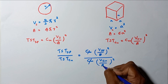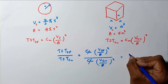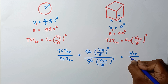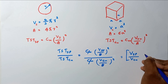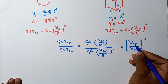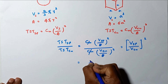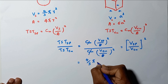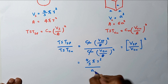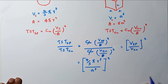We can simplify this. C_m cancels out. So we are getting (V_sphere / A_sphere)² divided by (V_cube / A_cube)². Then let me substitute the values: V_sphere is (4/3)πr³ and V_cube is a³, giving us [(4/3)πr³ / A_sphere]² divided by [a³ / A_cube]².